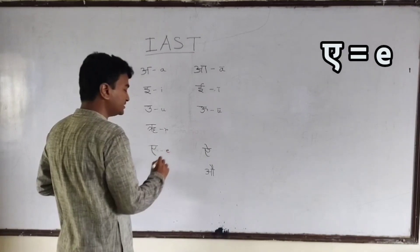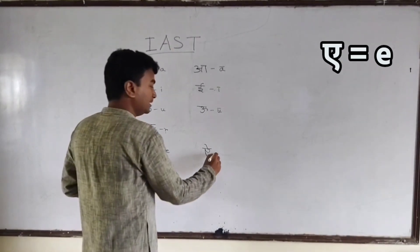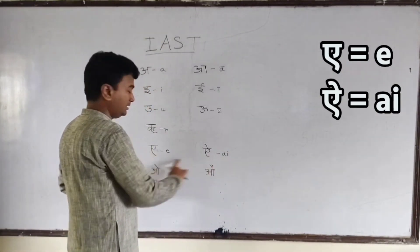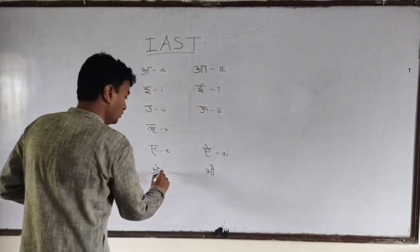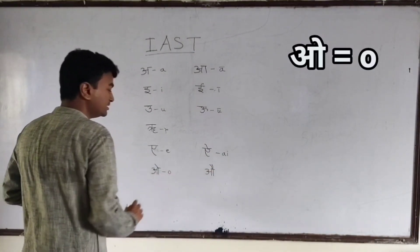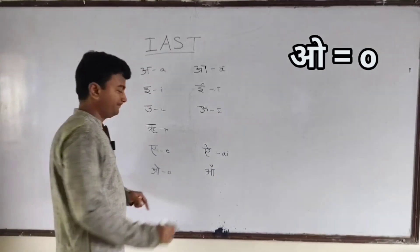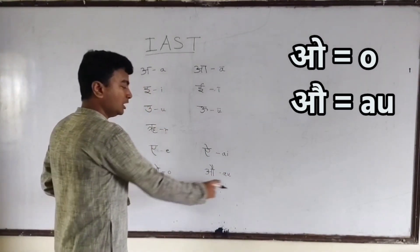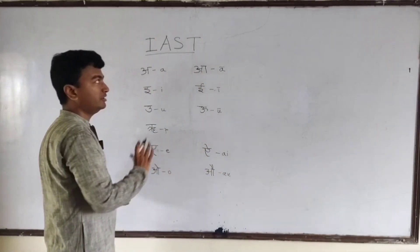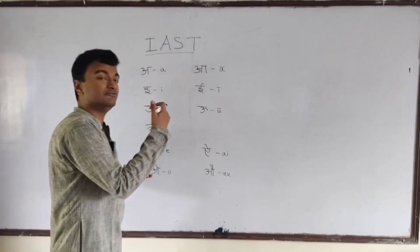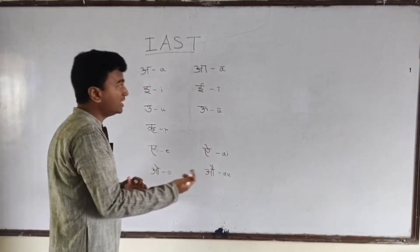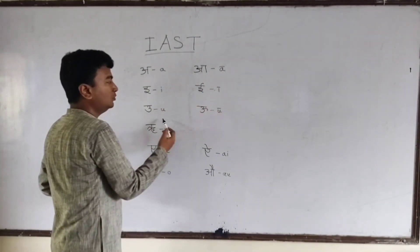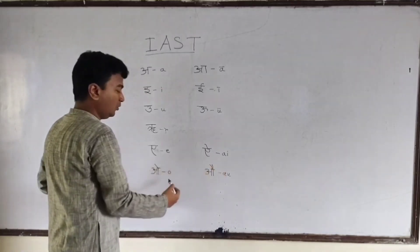'ai' is represented by a small 'e', 'o' is represented by a small 'o', and 'au' is represented by a 'u'. So to summarize the IAST system for Sanskrit vowels: a, ā, i, ī, u, ū, ṛ, e, ai, o, and au.